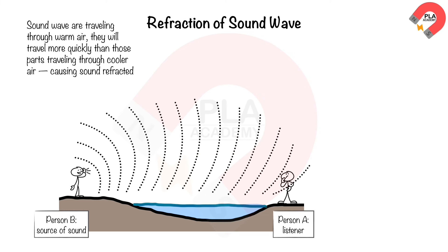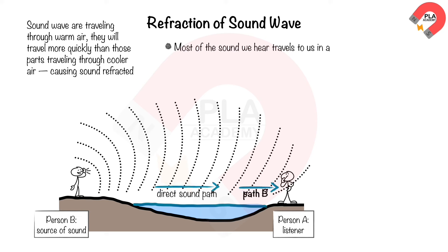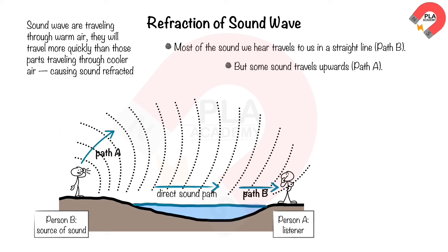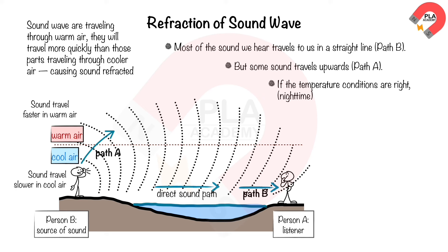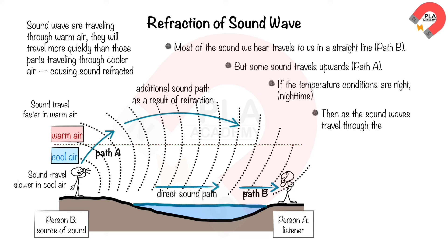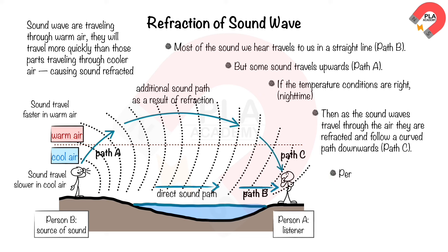Most sound travels in a straight line (path B), but some travels upward (path A). Under the right temperature conditions — usually at night — some parts of the sound wave travel through warmer air faster than through cooler air, and are refracted downward along a curved path (path C). Person A then receives two sets of sound waves, so the sound seems louder and clearer.